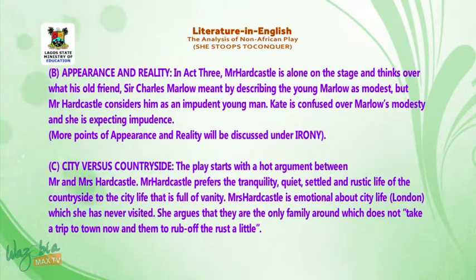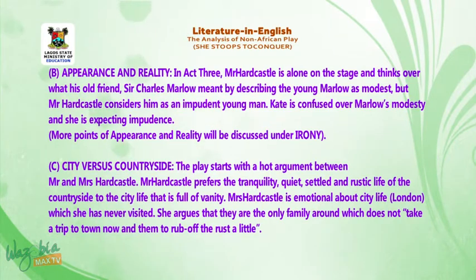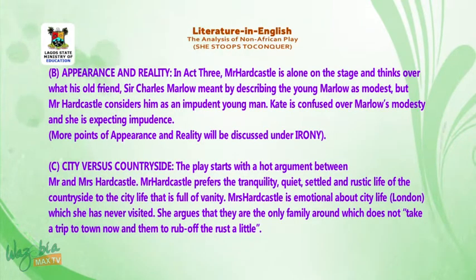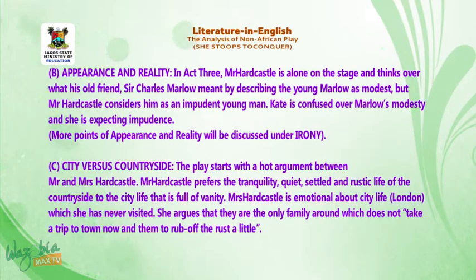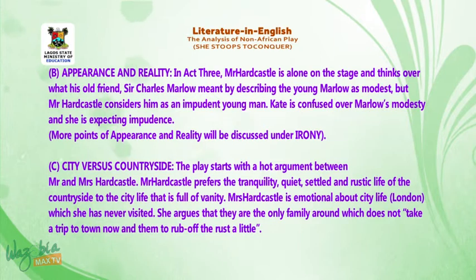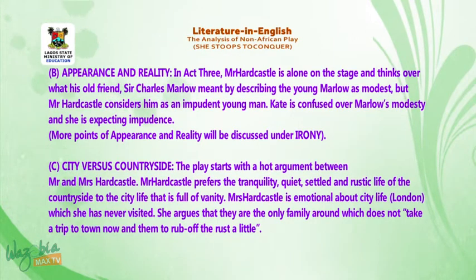Theme B: Appearance and Reality. In Act 3, Mr. Hardcastle is alone on stage and thinks over what his old friend Sir Charles Marlowe meant by describing the young Marlowe as modest, but Mr. Hardcastle considers him an impudent young man. Kate is confused over Marlowe's modesty when she is expecting impudence. More points on appearance and reality will be discussed under irony.